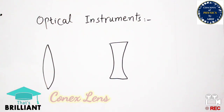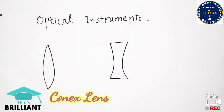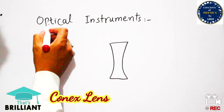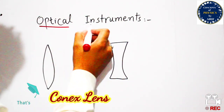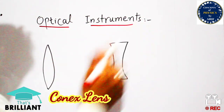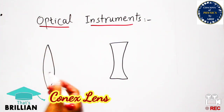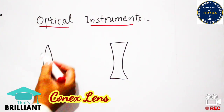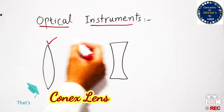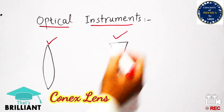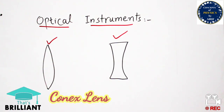Hi guys, welcome to my YouTube channel. In this video I will briefly discuss about optical instruments. In optical instruments there are two different types of lenses used: one is known as convex lens and the other is known as concave lens.